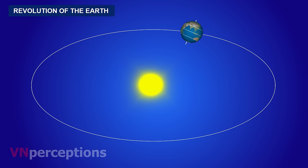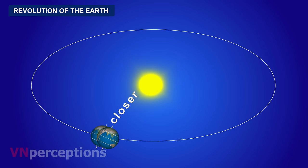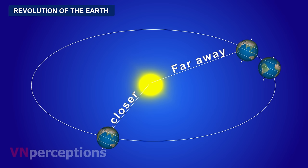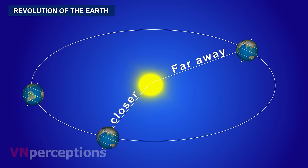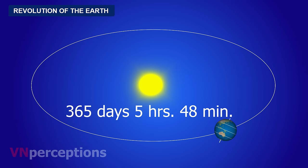In the revolution, the sun is not exactly in the center of the ellipse. Because of this, as the earth revolves around the sun, there are times when it is closer to the sun and times when it is farther away. When the earth comes closer, the speed of revolution increases; when it is farther away, the speed reduces — mainly because of the gravitational force of the sun. The earth completes one revolution around the sun in 365 days, 5 hours, 48 minutes and 45.51 seconds.